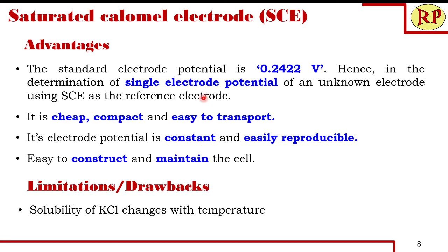The saturated calomel electrode has many advantages: it can be used to determine single electrode potentials, its EMF value is constant and easily reproducible, and it is cheap, compact, and easy to transport. It is easy to construct, and ready-to-use calomel electrodes are available in the market in a form even simpler than the elaborated diagram — small enough to carry in a pocket. Maintenance is minimal: once a month or every two months, a little KCl crystals can be added through the side tube to maintain saturation.